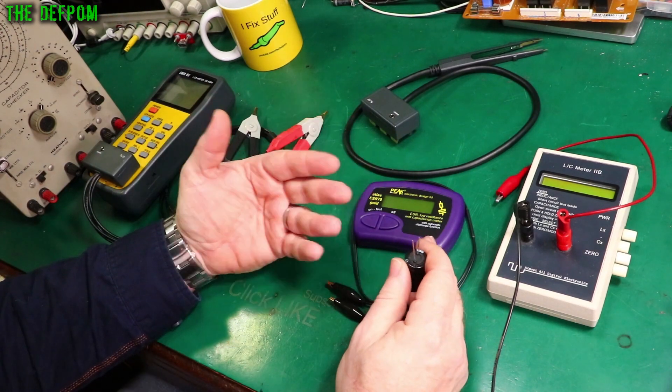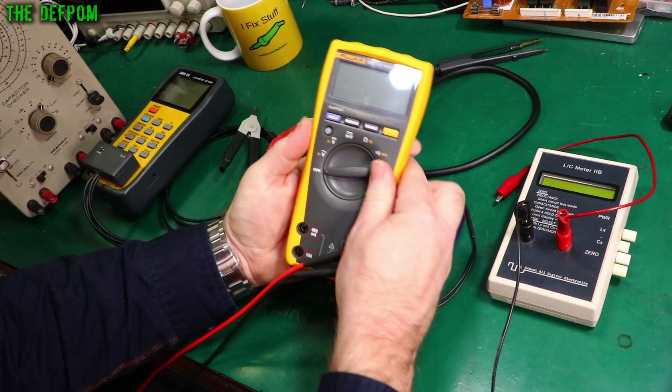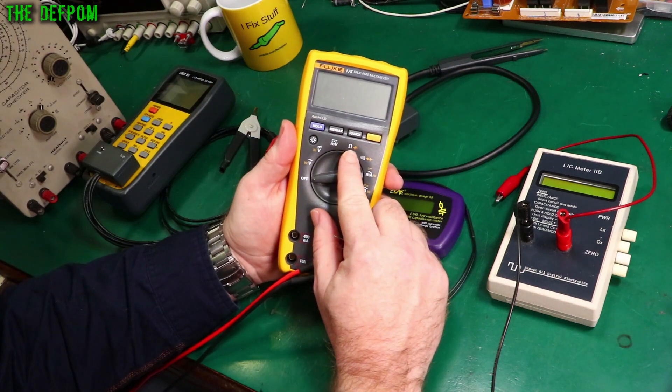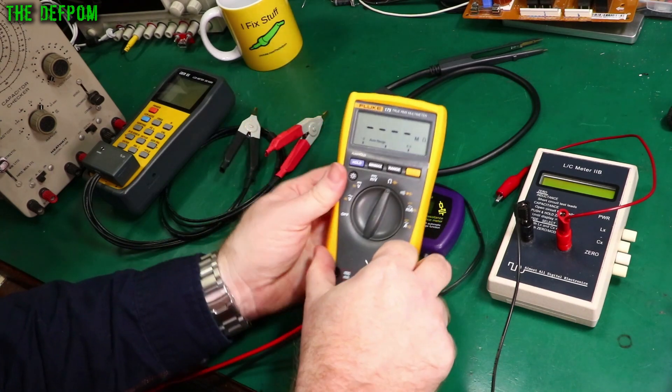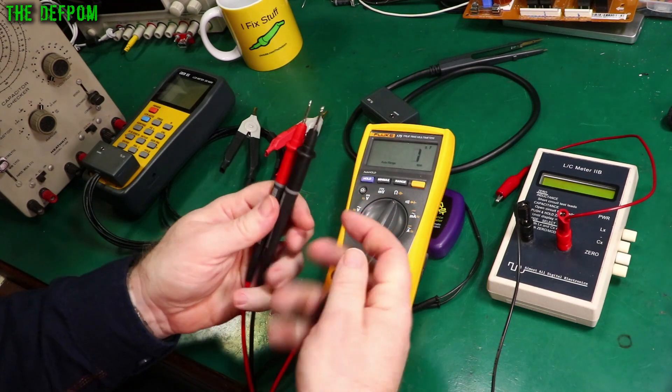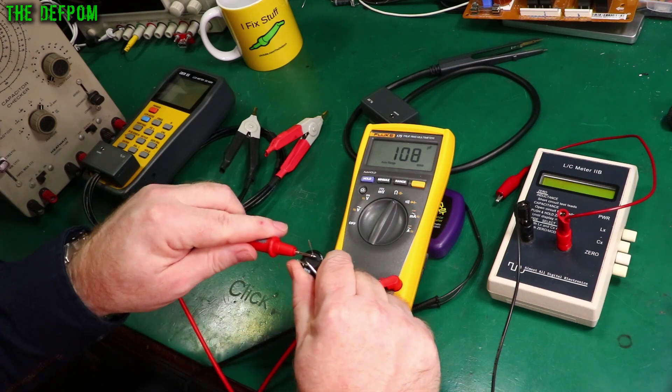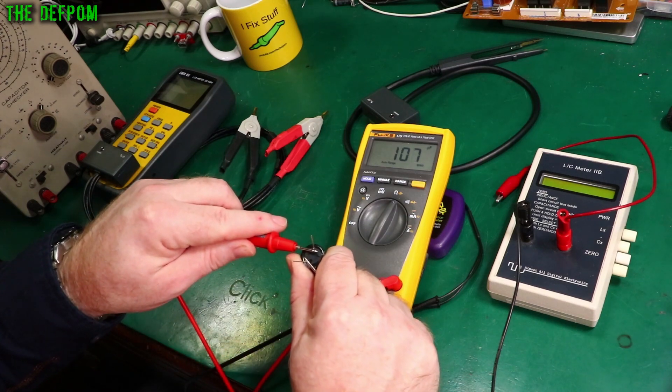If you're also just checking capacitors you can actually use your multimeter. Here I've got a Fluke 175, this has got capacitance on it just here. So if I want to check this with this meter, let's get cables, change to capacitance, and just stick them on there. There you go, 107 microfarad.